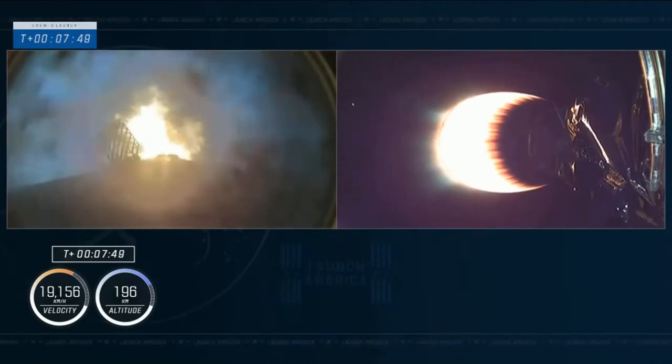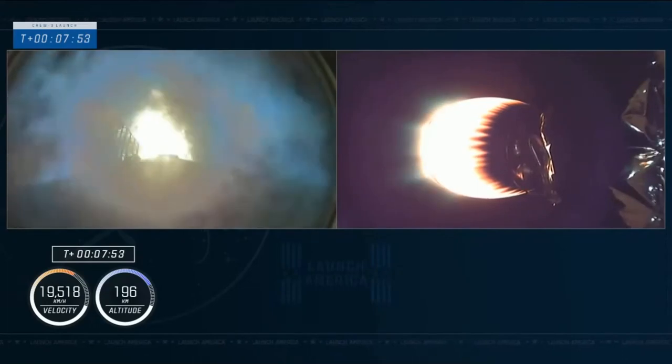This is a 27-second burn. This will slow the first stage down. We'll then enter the atmosphere where the grid fins begin to work, and then we will fire the single center engine as we approach the drone ship.